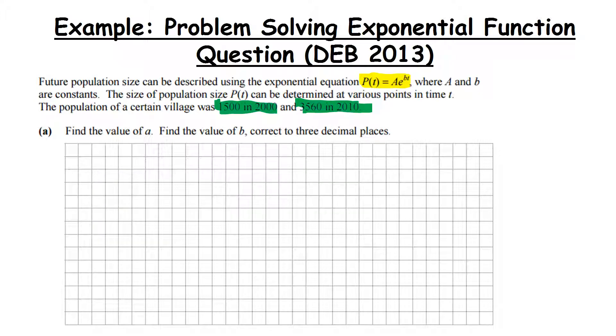Future population size can be described using the exponential equation P(t) = Ae^(bt) where a and b are constants. The size of population P(t) can be determined at various points in time t. The population of a certain village was 1500 in the year 2000 and 3560 in the year 2010. They want us to find the value of a and find the value of b correct to three decimal places.